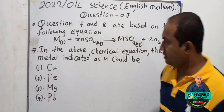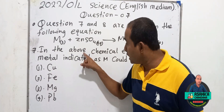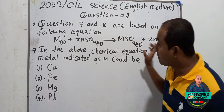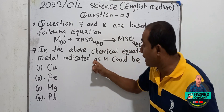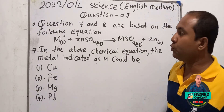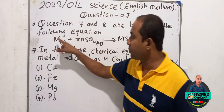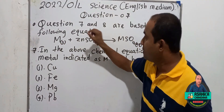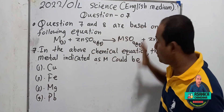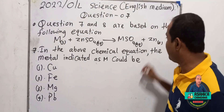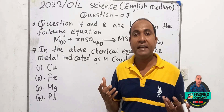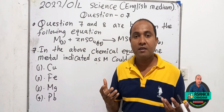So what is question number 7? In the above chemical equation, the metal indicated as M could be what? M reacts with zinc sulfate — M combines with the sulfate and produces M sulfate, and zinc is displaced.